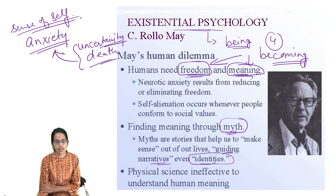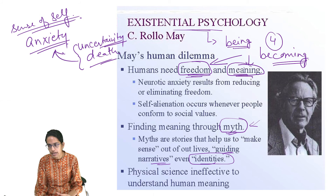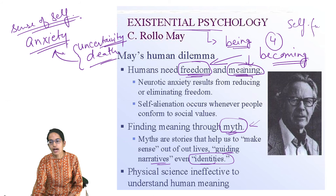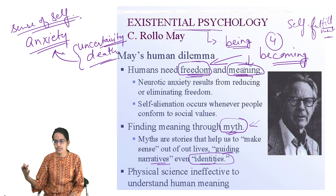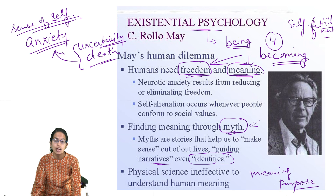Freedom along with meaning — which comes through myths, narratives, and identities — forms the basis for the existentialism of human beings. It is not just about being, but about how we become. We have a path of self-fulfillment, and we can provide meaning to our future generations. This is how we give meaning to our life, which is well explained in existential psychology.